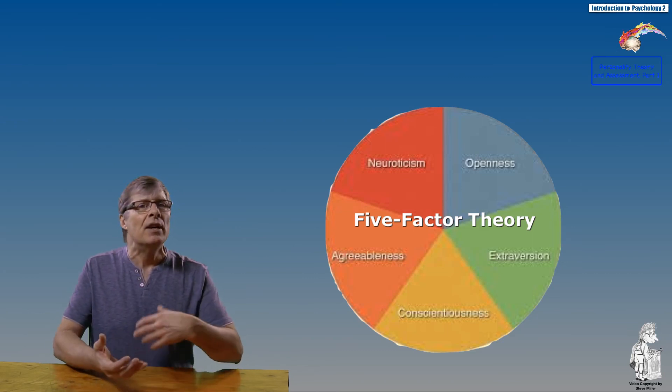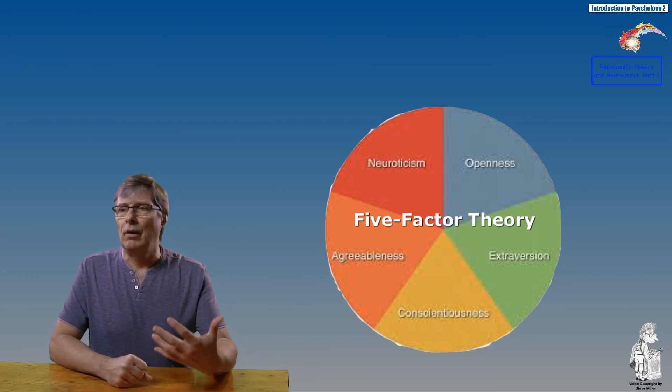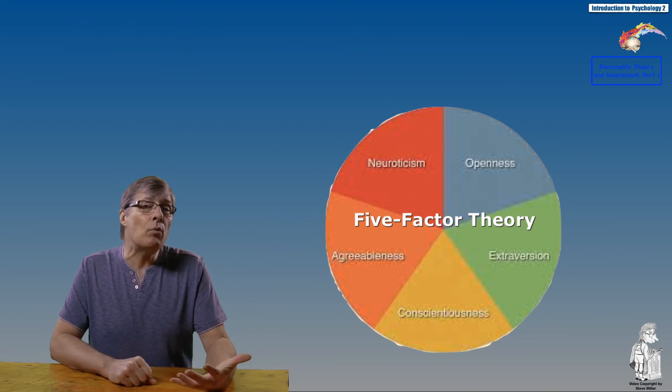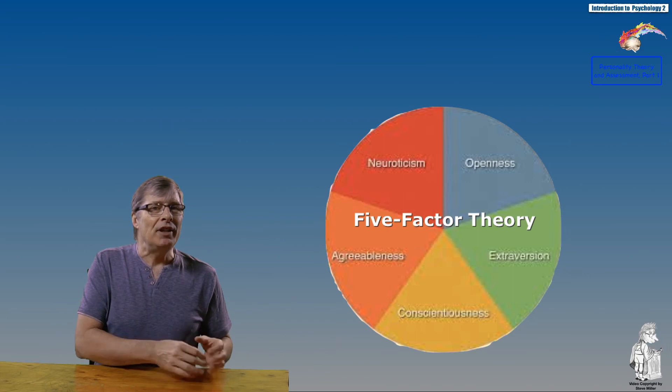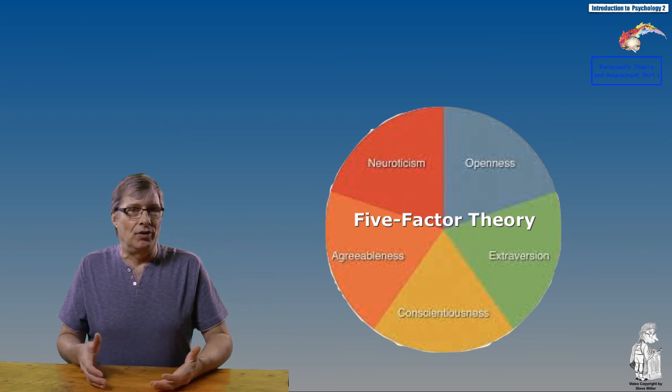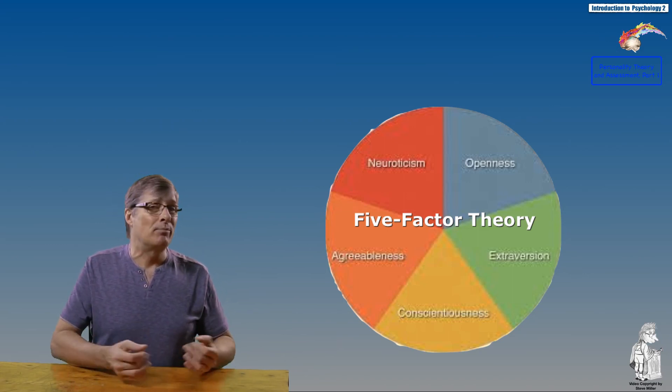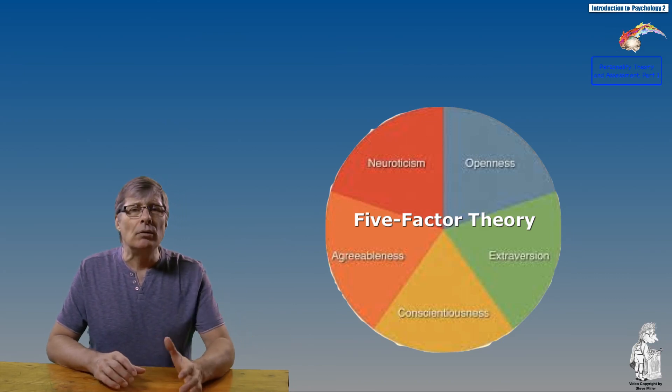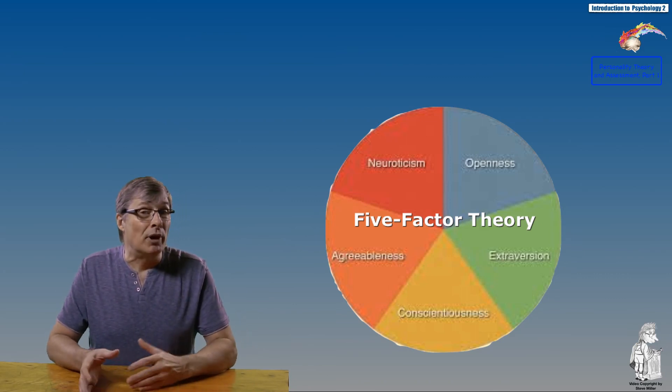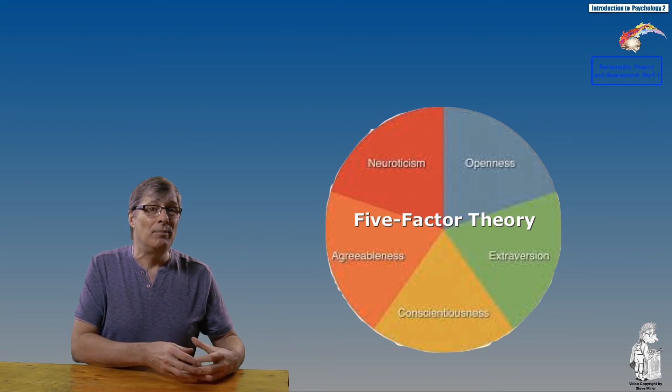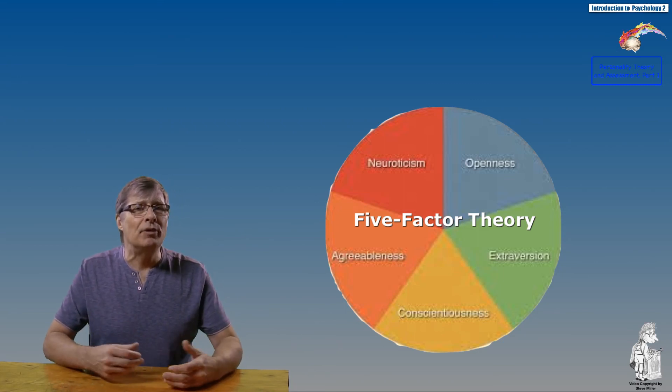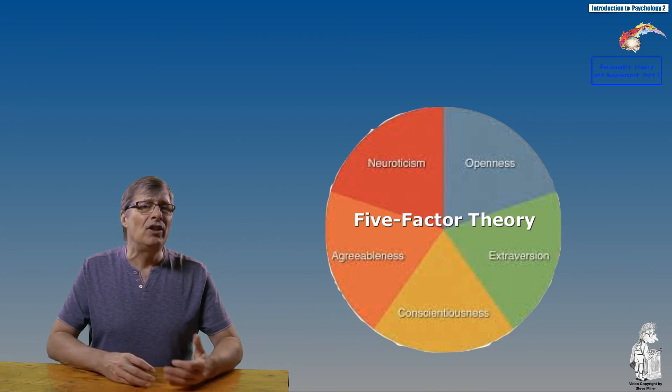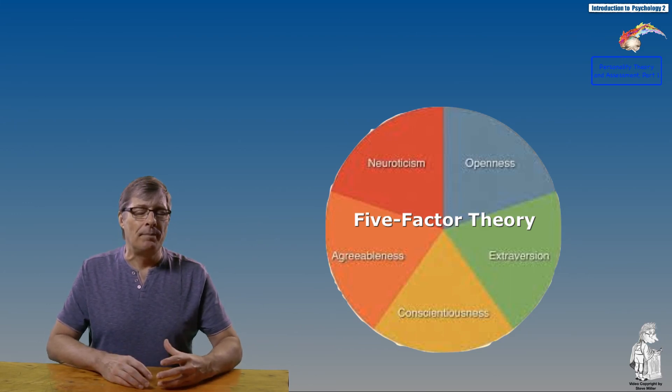The fifth Big Factor is neuroticism. Here, emotional stability versus instability is of issue. The instability experiences more negative emotions—moody, irritable, nervous, and worry a bit more—whereas someone with more stable emotional ability has calmness, is even-tempered, easygoing, and relaxed.